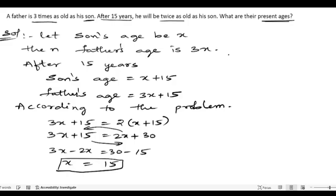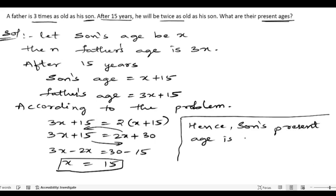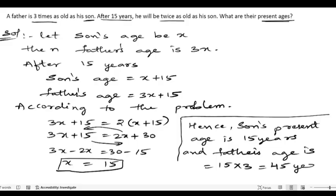Hence, son's present age is 15 years and father's age is 15 × 3, which is 45 years old.